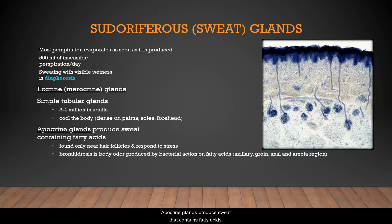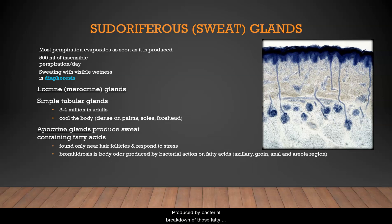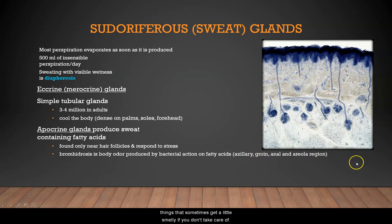Apocrine glands produce sweat that contains fatty acids and are found only near hair follicles, responding to stress. Bromhidrosis is the body odor produced by bacterial breakdown of those fatty acids. It's no surprise that apocrine sweat glands are found near the axillary, groin, anal, and areola regions — areas that can get a little smelly if you don't take care of them.